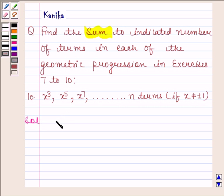Given GP is x to the power 3, x to the power 5, x to the power 7 and so on up to n terms.